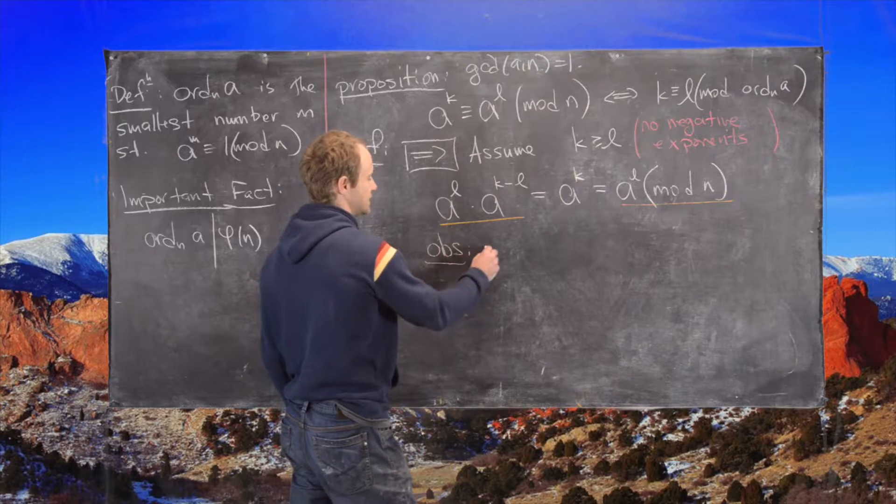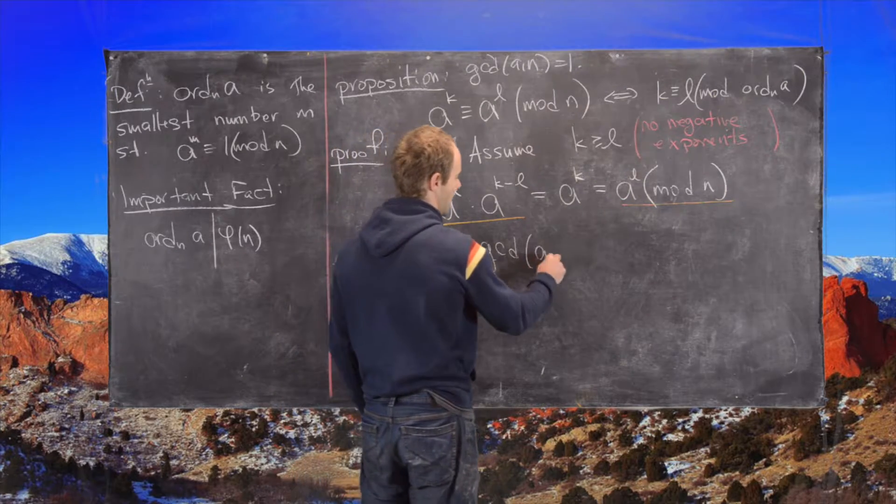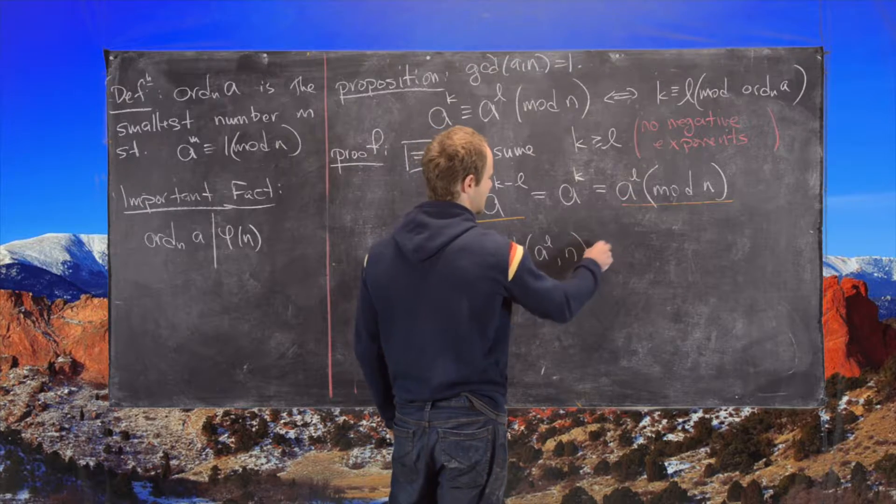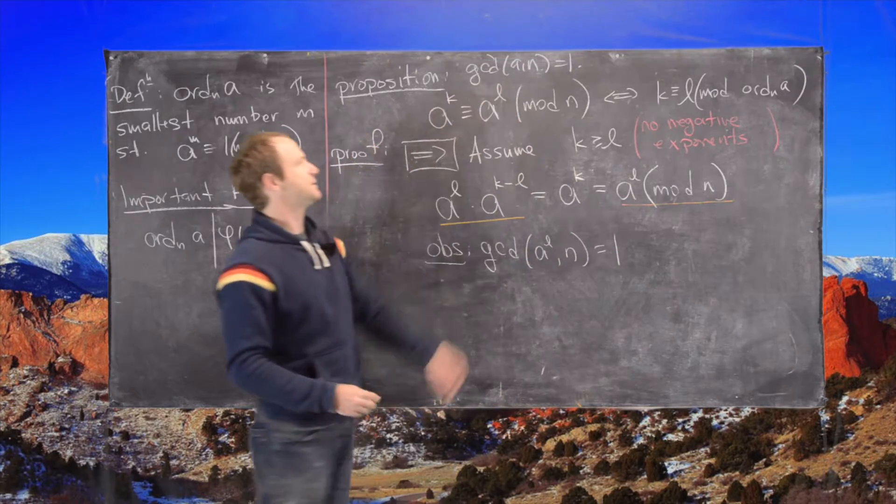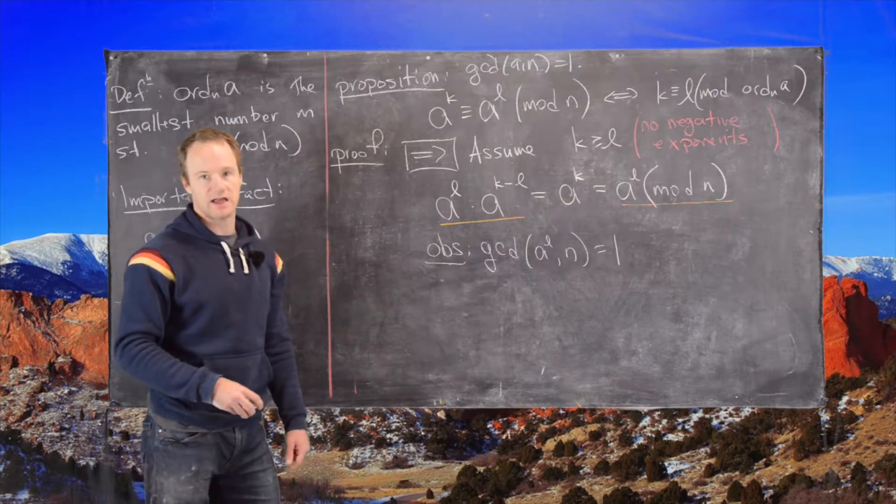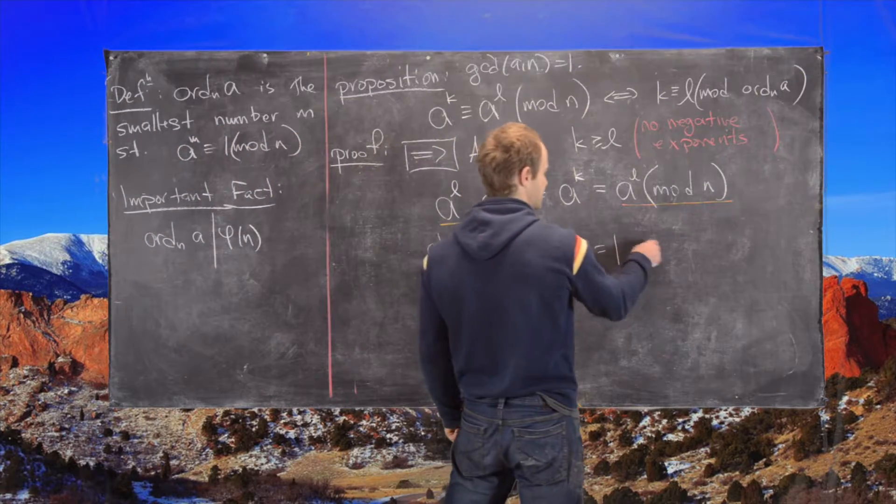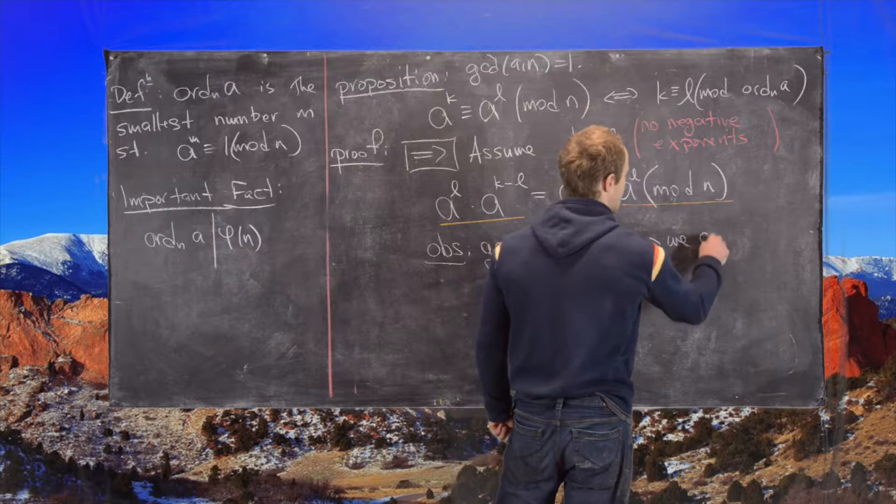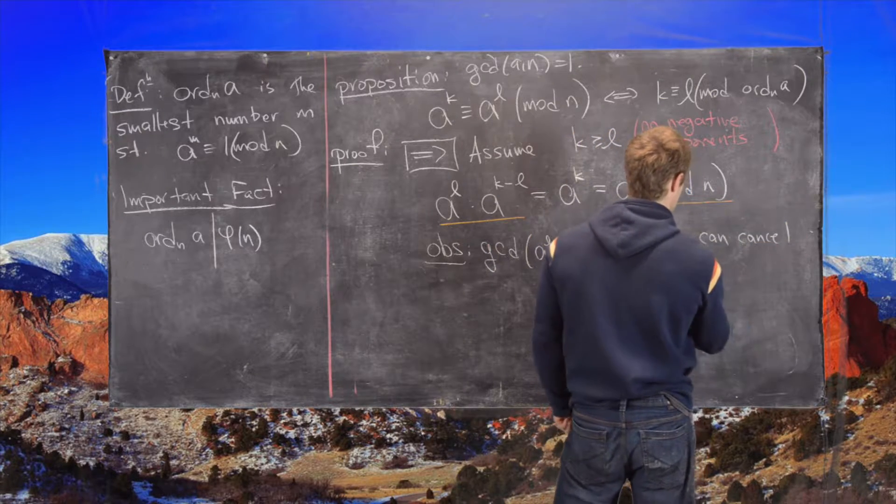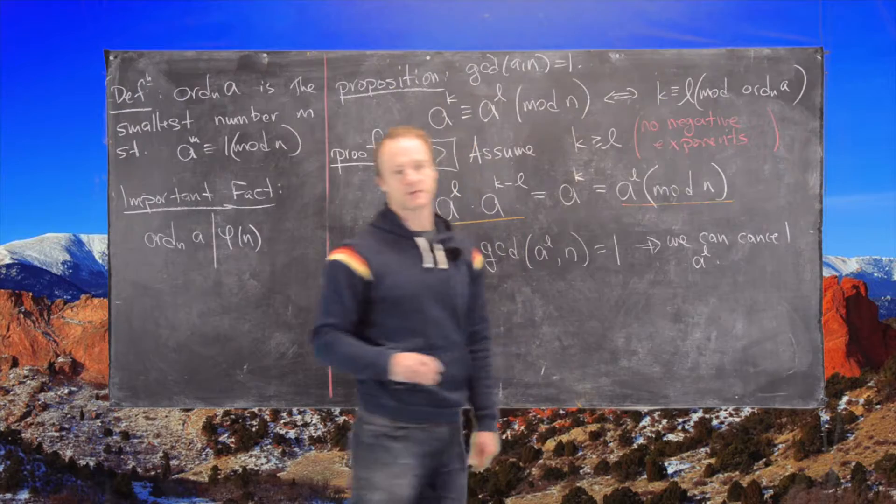So let's observe that the GCD of a to the l and n is equal to one, and that's because the GCD of a and n is equal to one. Which tells us we can cancel a to the l from both sides.